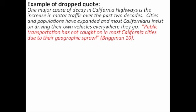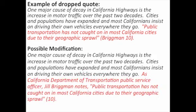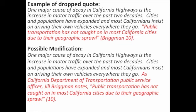So let's look at an example where a signal phrase has been added. 'One major cause of decay in California highways is the increase in motor traffic over the past two decades. Cities and populations have expanded, and most Californians insist on driving their own vehicles everywhere they go. As California Department of Transportation public service officer Jill Brigman notes, public transportation has not caught on in most California cities due to their geographic sprawl.' Not only does this have a great signal phrase as a lead-in, but you should notice that the citation has changed as well. Instead of it saying Brigman 10, in the second version where you have the appropriate signal phrase or lead-in, you only have to write the page number.